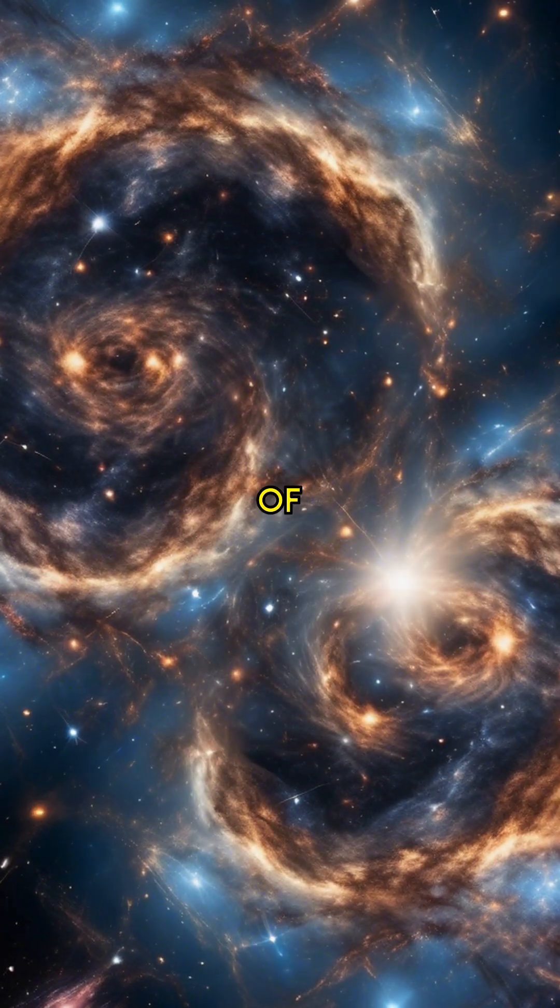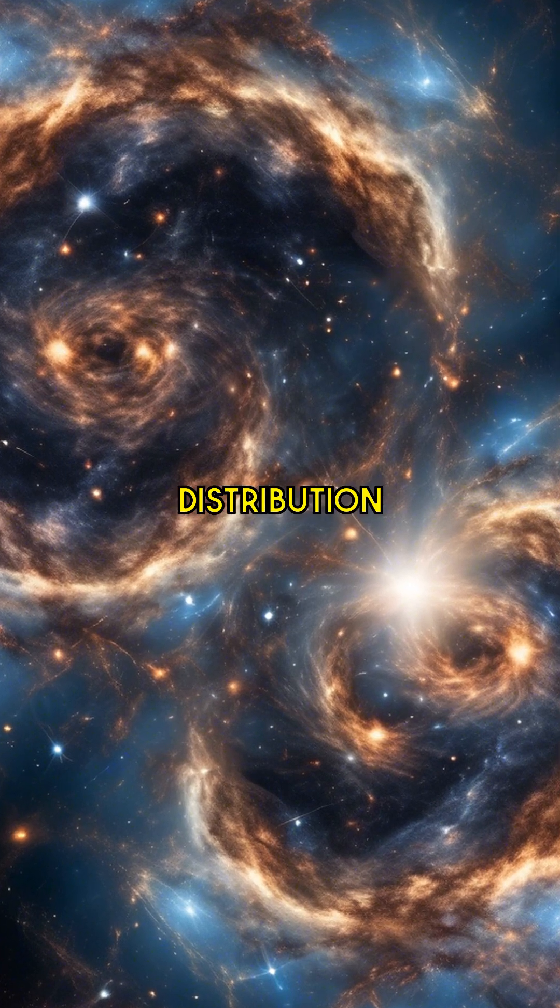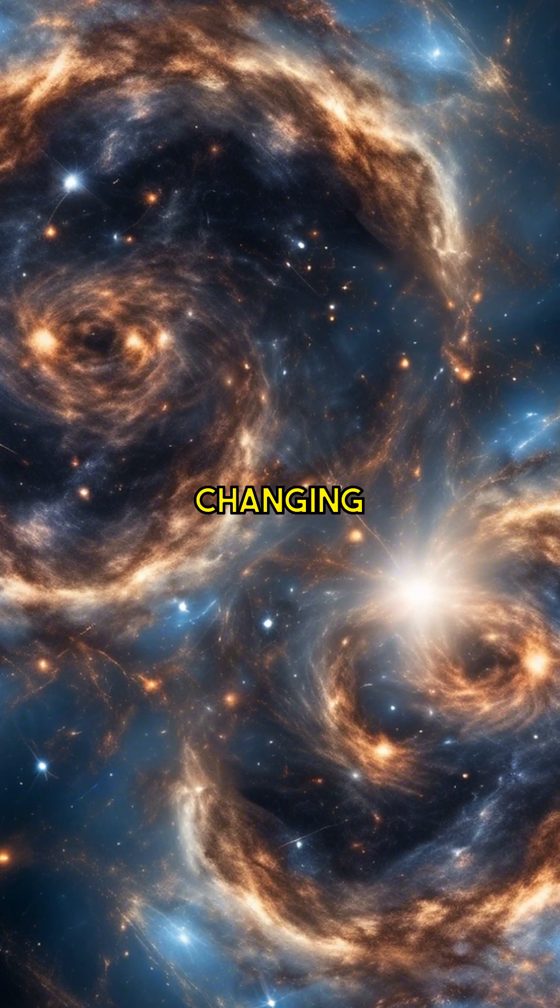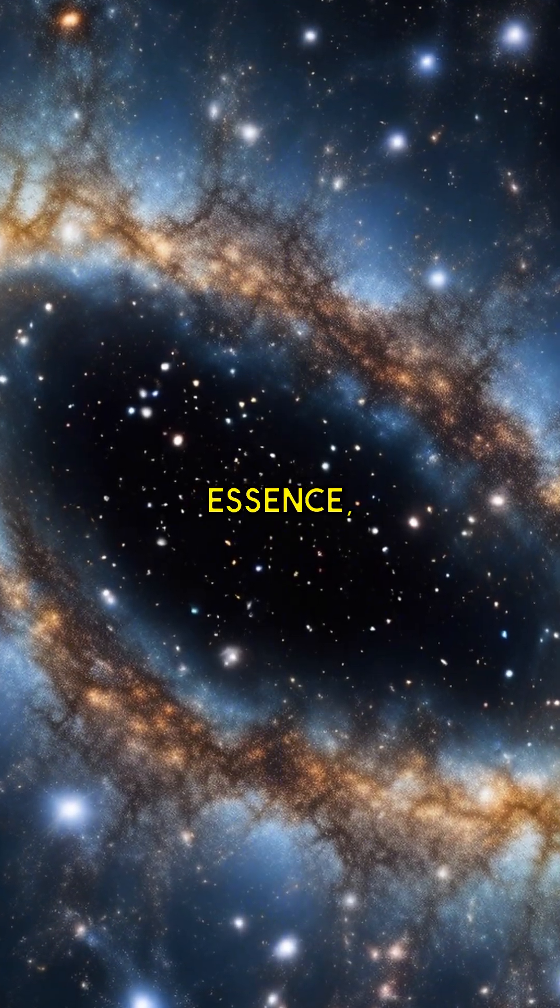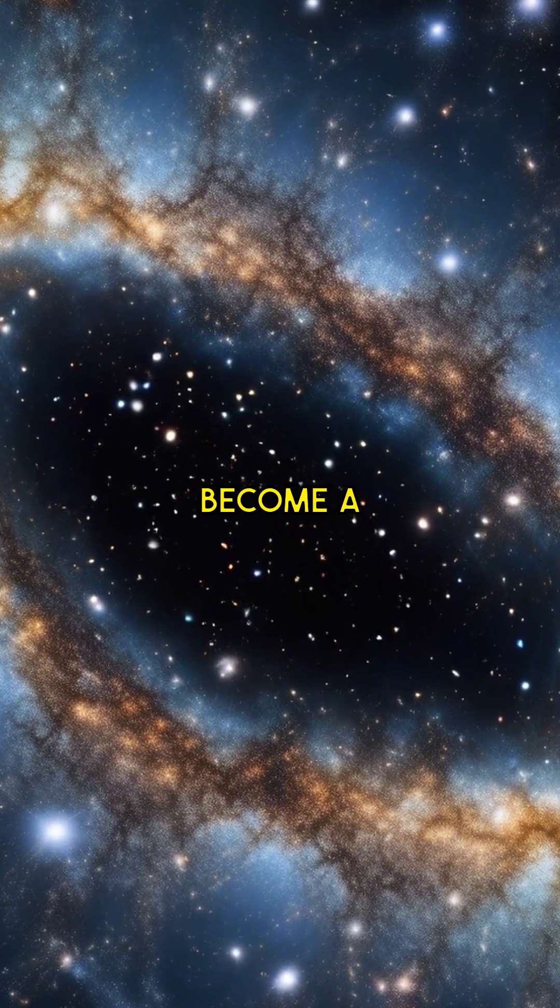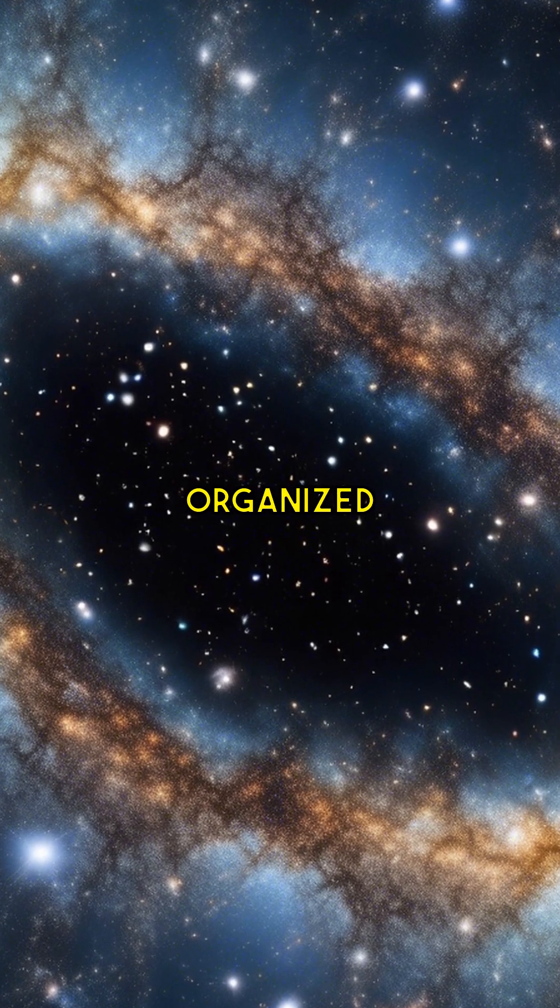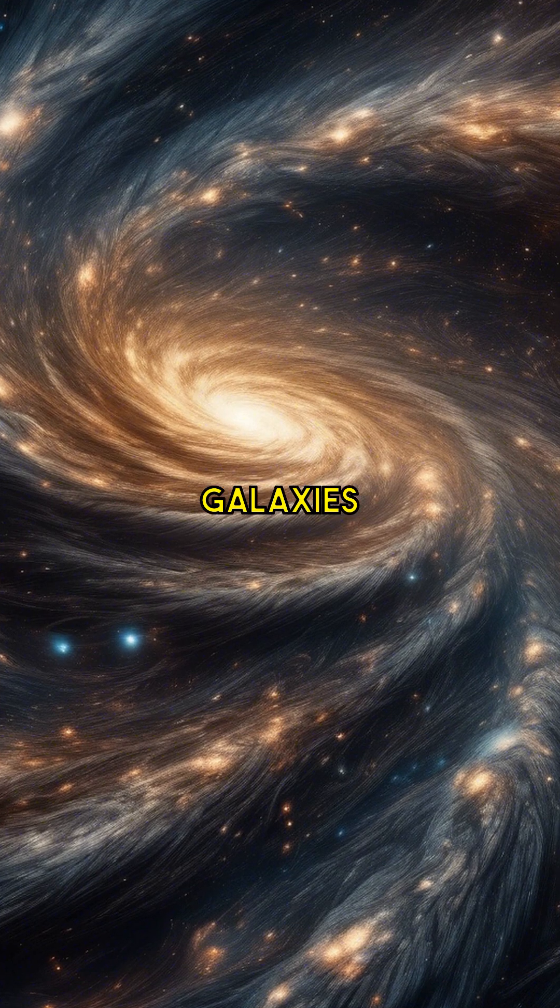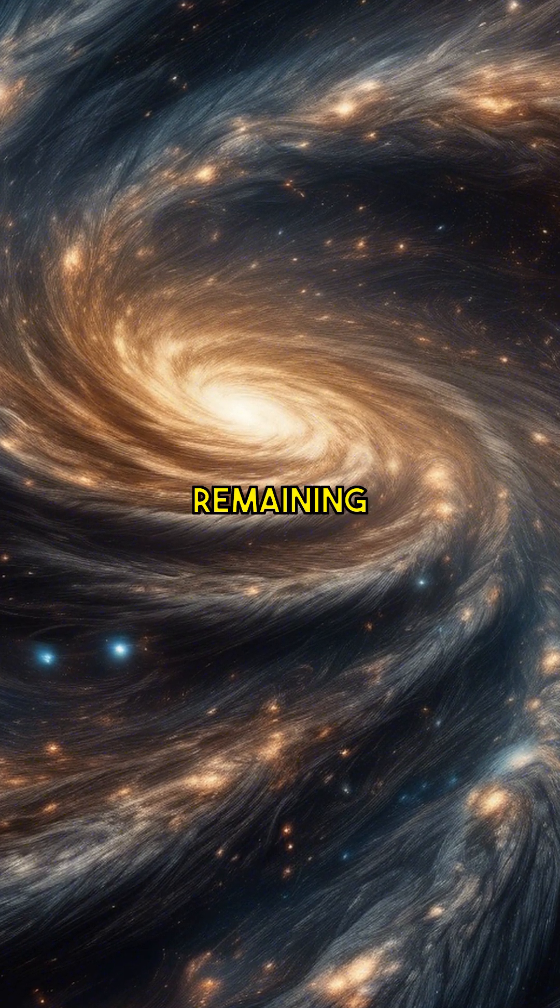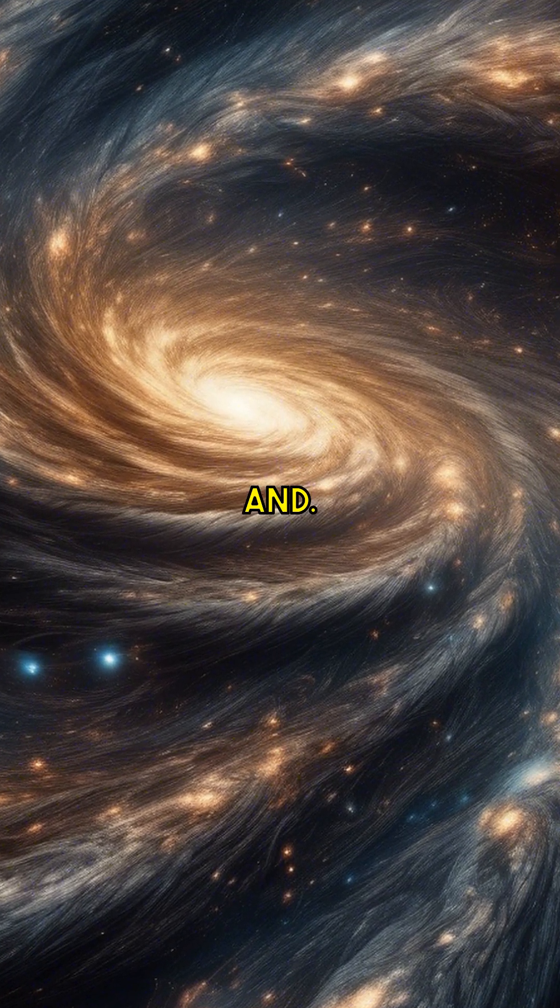but the absence of dark matter would alter the distribution of mass, changing gravitational lensing effects and how we see the universe's structure. In essence, the universe would become a more diffuse and less organized place, with the cosmic web losing its coherence and galaxies no longer remaining as bound systems.